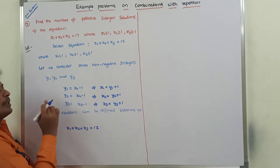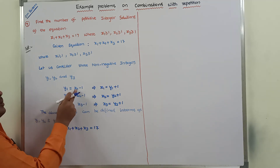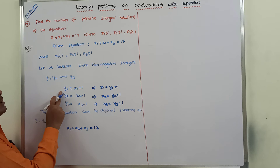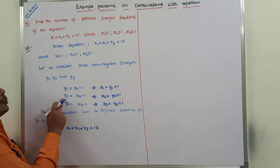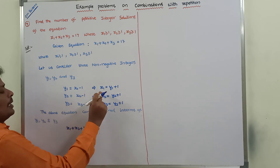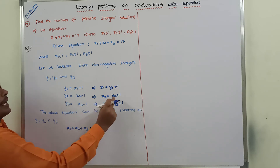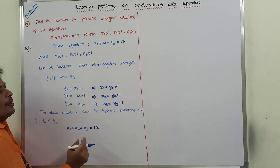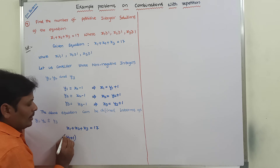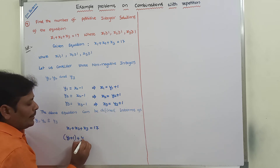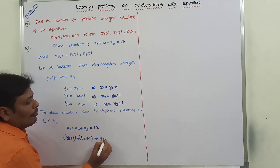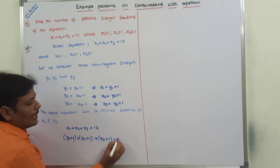The constant 1 can be moved to the left-hand side, so it becomes: y1 plus 1 equals x1, y2 plus 1 equals x2, y3 plus 1 equals x3. Therefore, substituting x1, x2, and x3 values: y1 plus 1, plus y2 plus 1, plus y3 plus 1, is equal to 17.